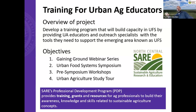We have four objectives. One was to expand on our Gaining Ground program and build out a webinar series for that. We also wanted to provide support for our ongoing urban food system symposium, which is every other year. And for the last two, it was to support a pre-symposium workshop and to support our urban ag study tour.